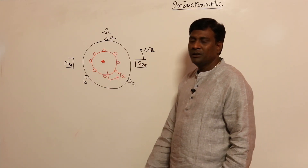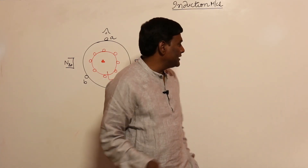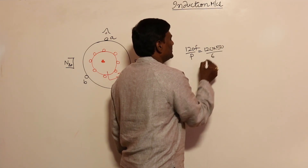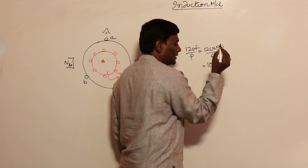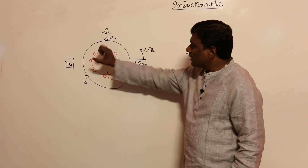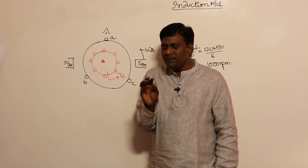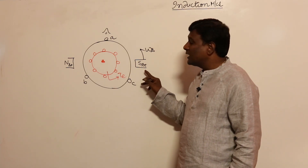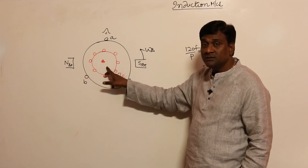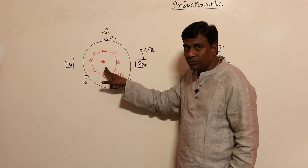The RMF rotates at synchronous speed. For a six-pole, 50 Hz machine: synchronous speed = 120f/P = 120 × 50 / 6 = 1000 RPM. So the stator RMF rotates at 1000 RPM. If the rotor is held stationary, it is at 0 RPM and the RMF is at 1000 RPM, so the relative velocity is 1000 RPM. Even with this high relative velocity, torque is still produced in the induction motor — independent of relative velocity.